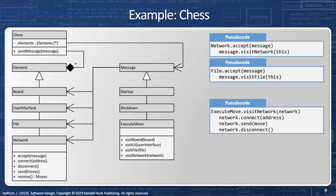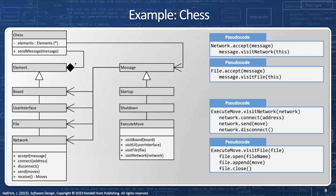Let's look at another example — file is going to accept a message. There's only a one-line code for accept ever: it just calls messages.visitFile and it's done, because it has no idea what its interfaces are going to correspond to. But visit file is going to say: file.open, append the move, and then close. Visit file will know exactly how to execute this specific action onto the file interfaces.